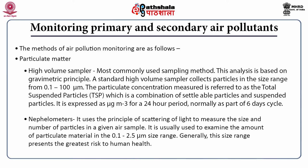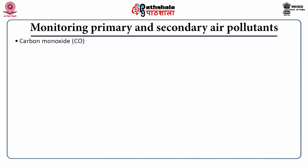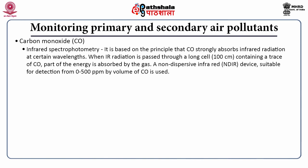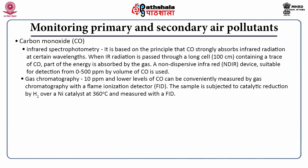Carbon monoxide is measured by infrared spectrophotometry, based on the principle that CO strongly absorbs infrared radiation at certain wavelengths. When IR radiation is passed through a long cell (about 100 cm) containing a trace of CO, part of the energy is absorbed. A non-dispersive infrared (NDIR) device suitable for detection from 0 to 500 ppm by volume of CO is used. For CO at 10 ppm or lower, gas chromatography with a flame ionization detector (FID) can be used; the sample is subjected to catalytic reduction by H₂ over a nickel catalyst at 360°C and measured with an FID.